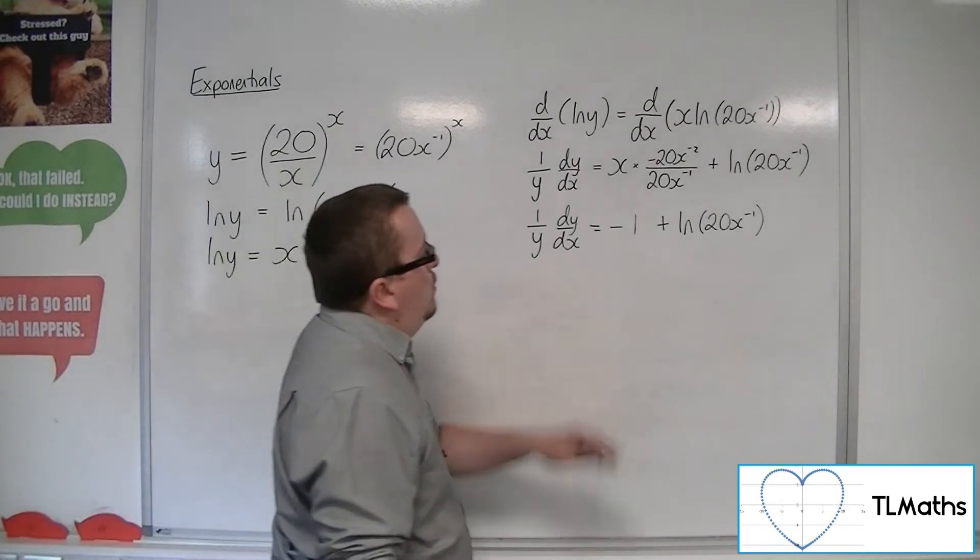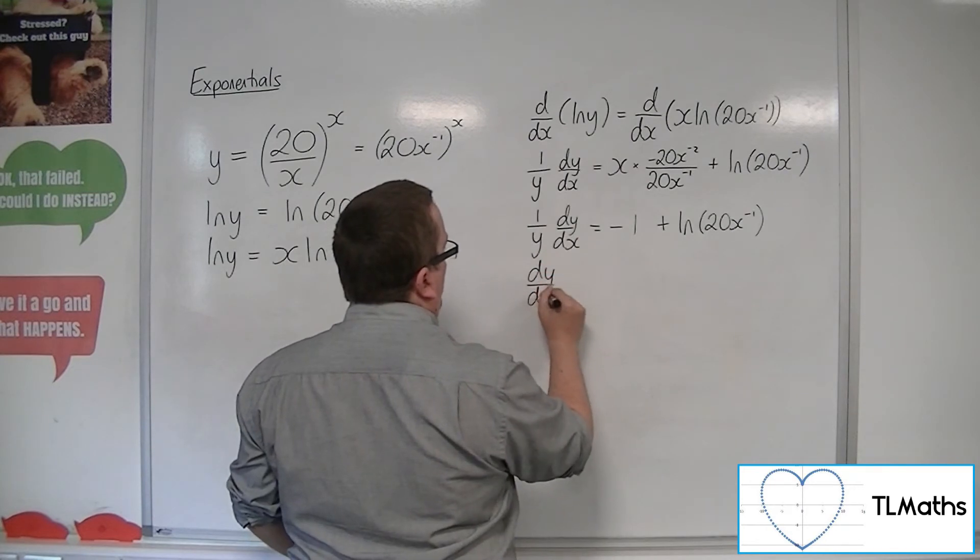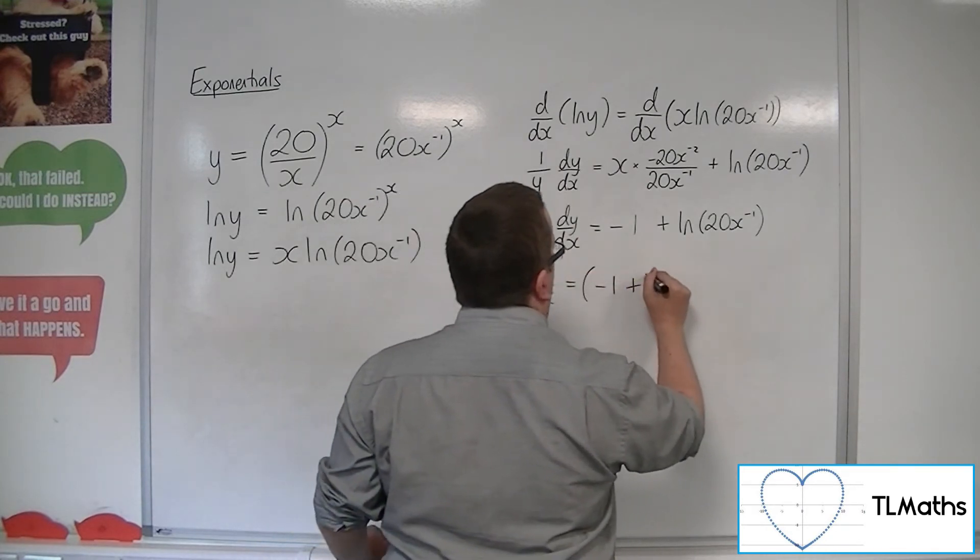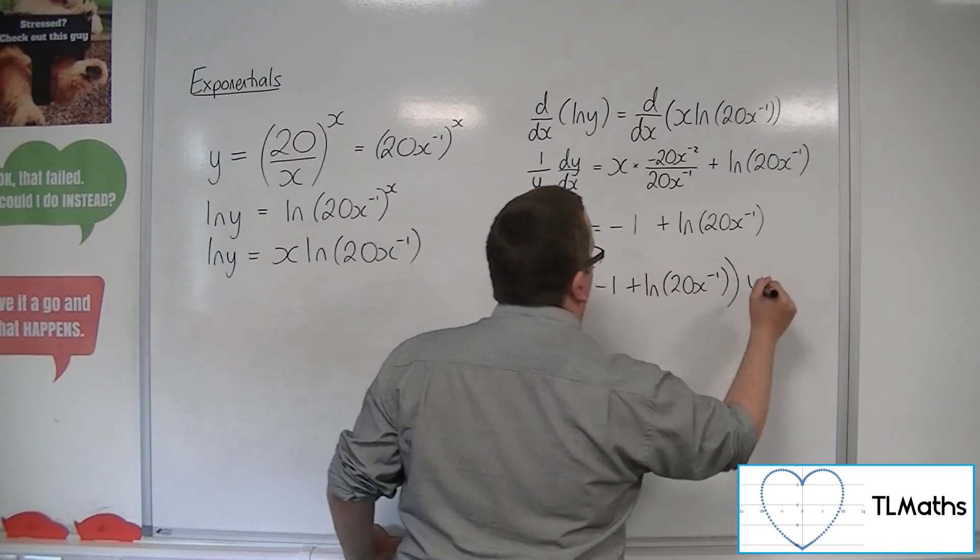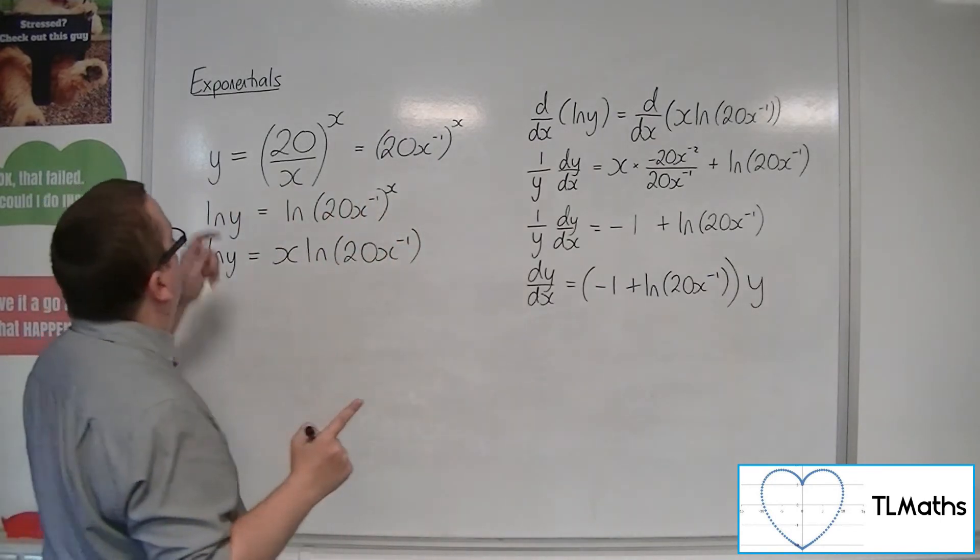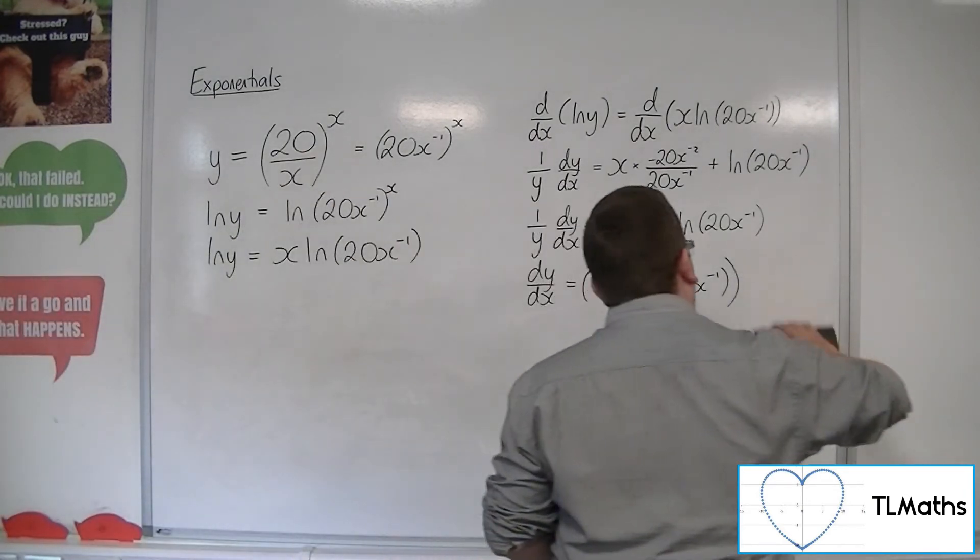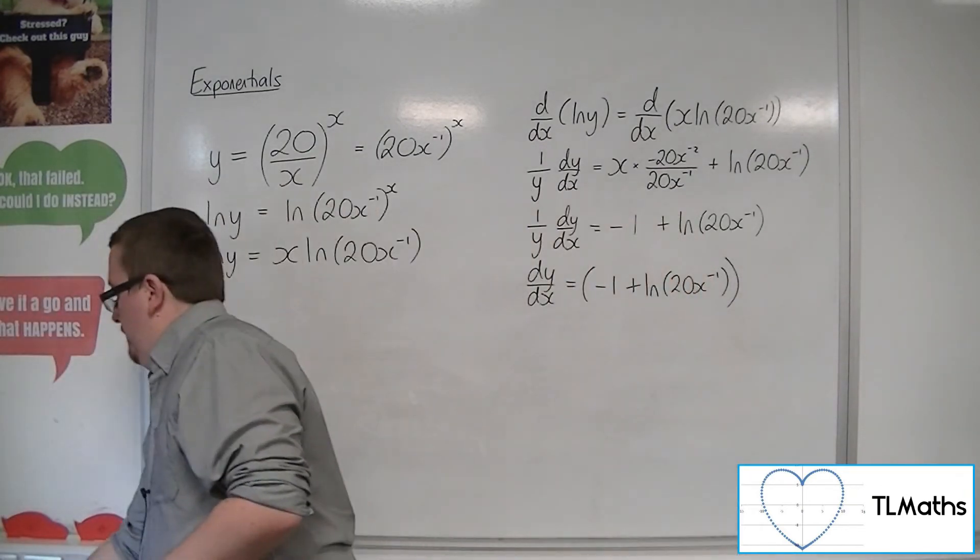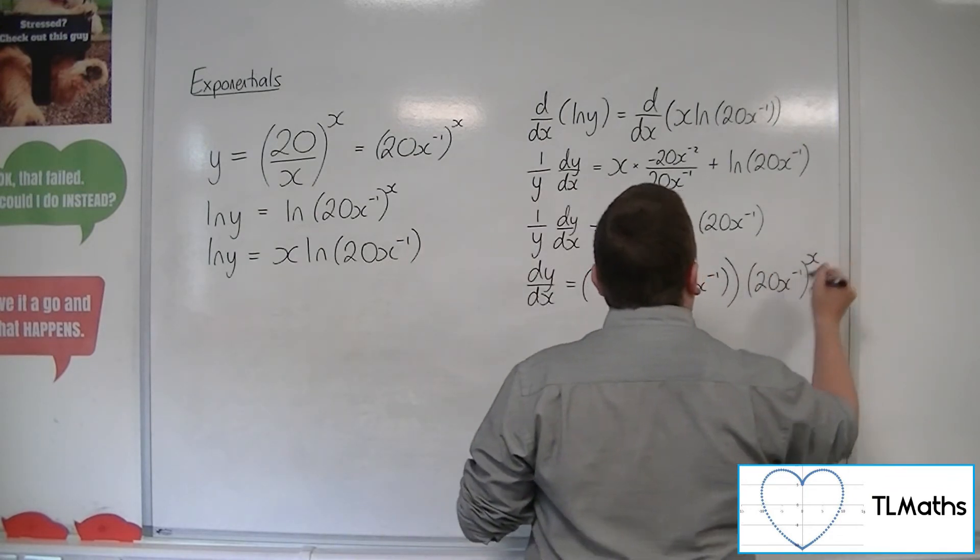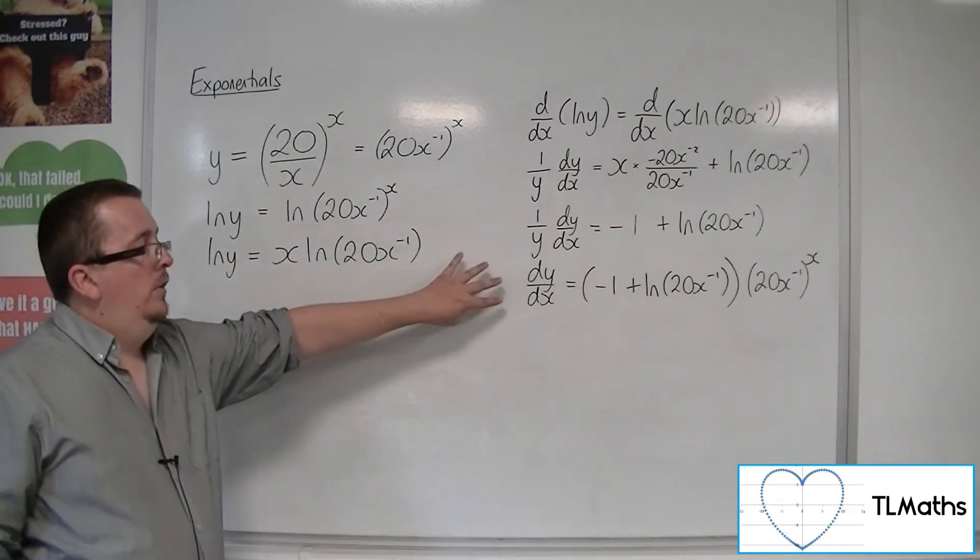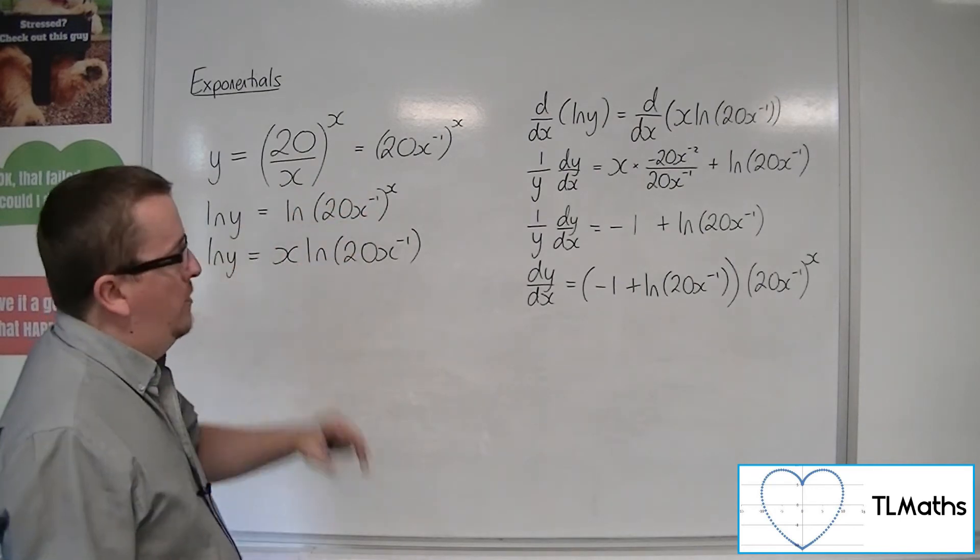So now what we want to do is multiply both sides by y. So we're going to have minus 1 plus ln 20x to the minus 1 times y. But remember, y was 20x to the minus 1 to the x. So we can rewrite that as 20x to the minus 1 to the x. So this is the first derivative of this. Not a very pretty looking thing.